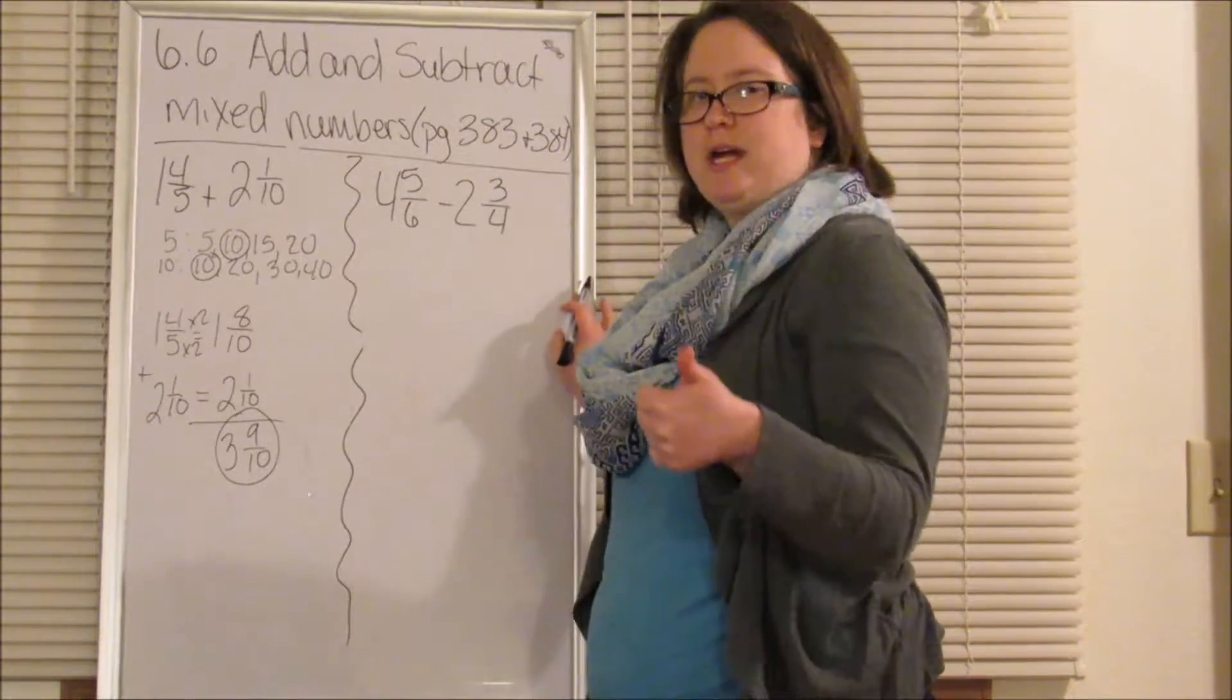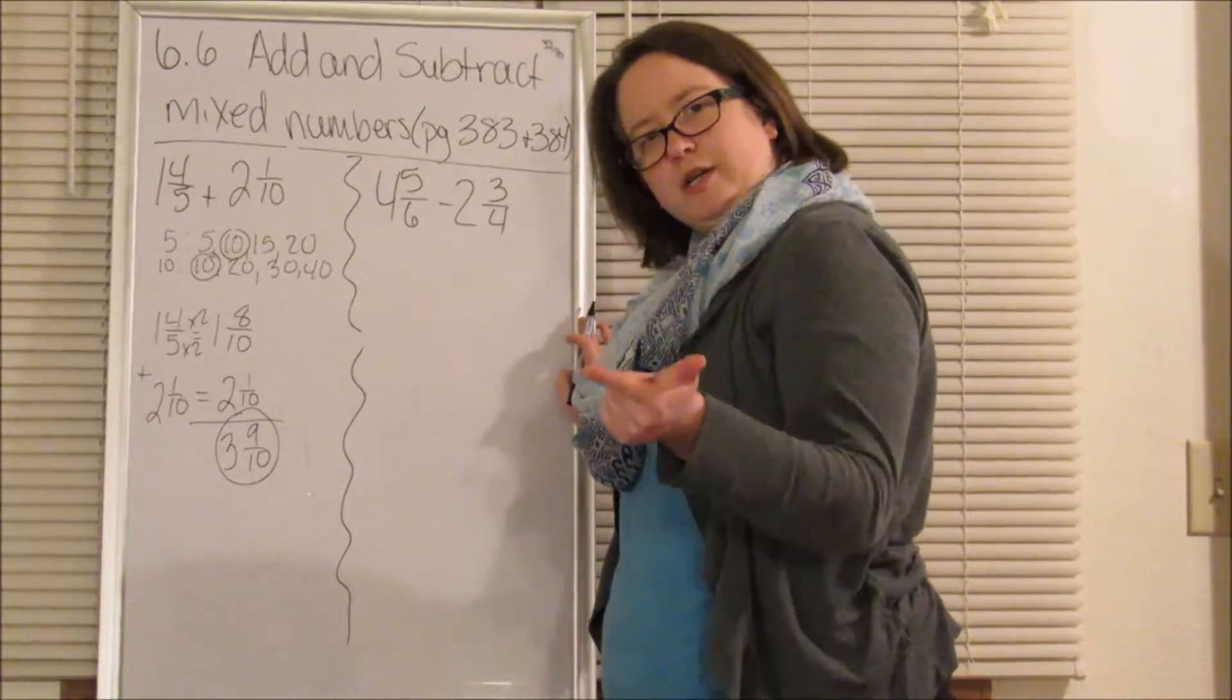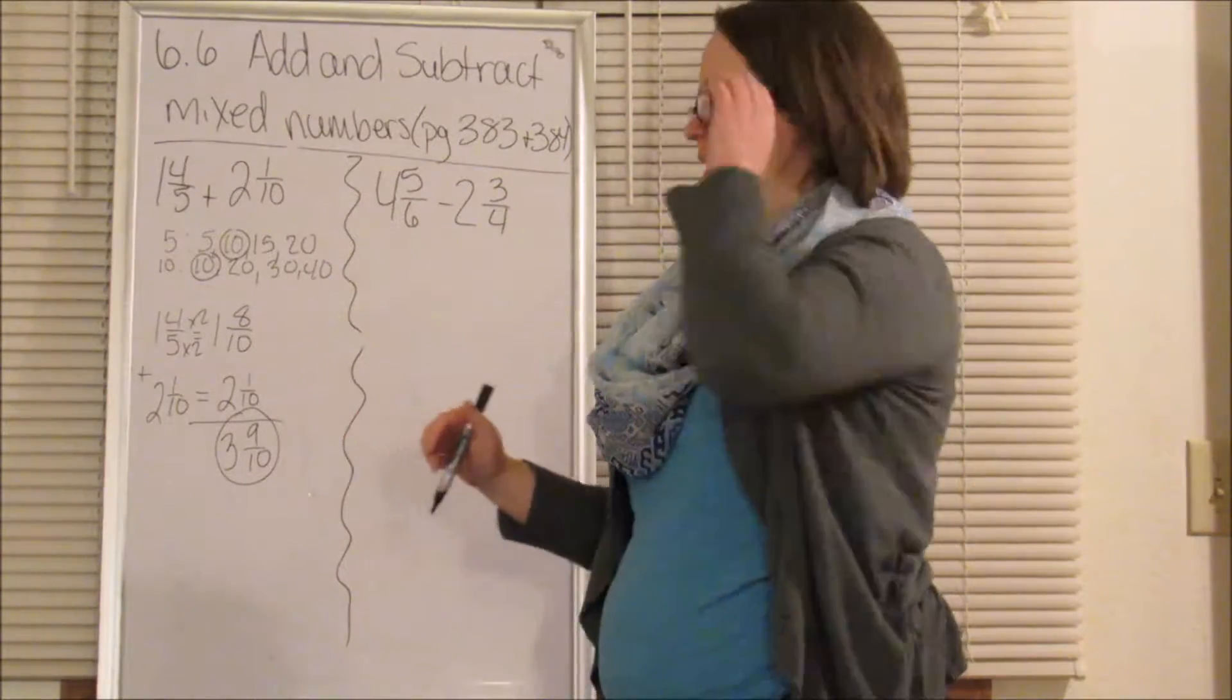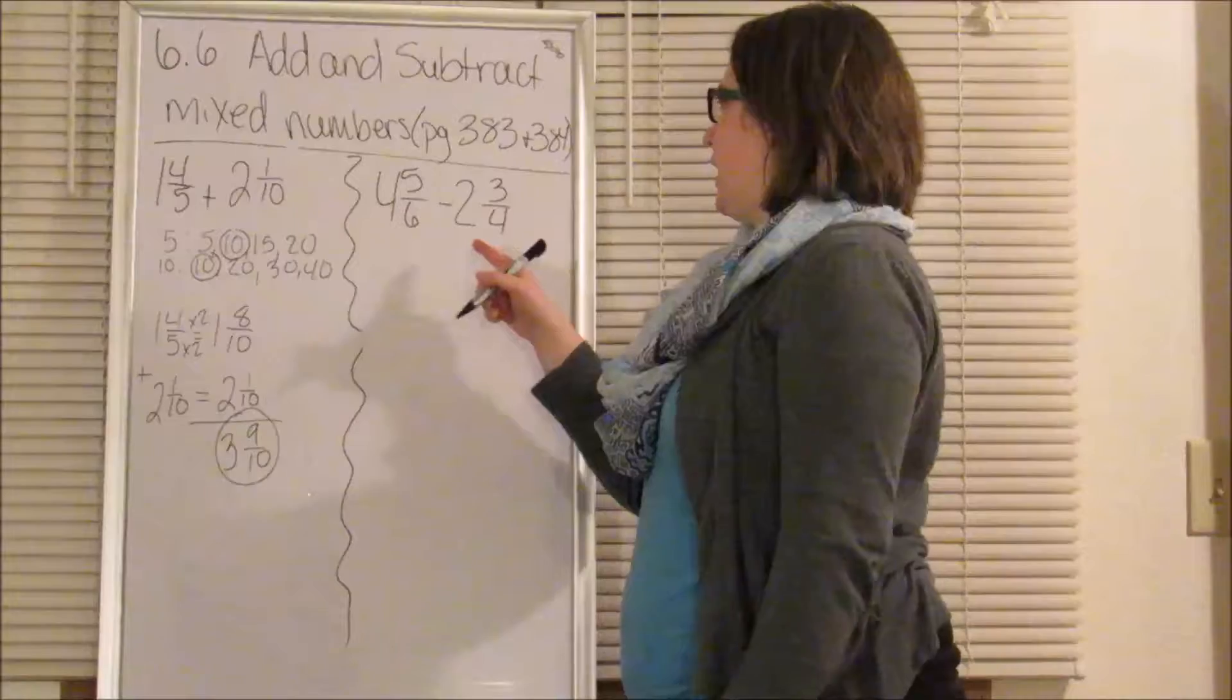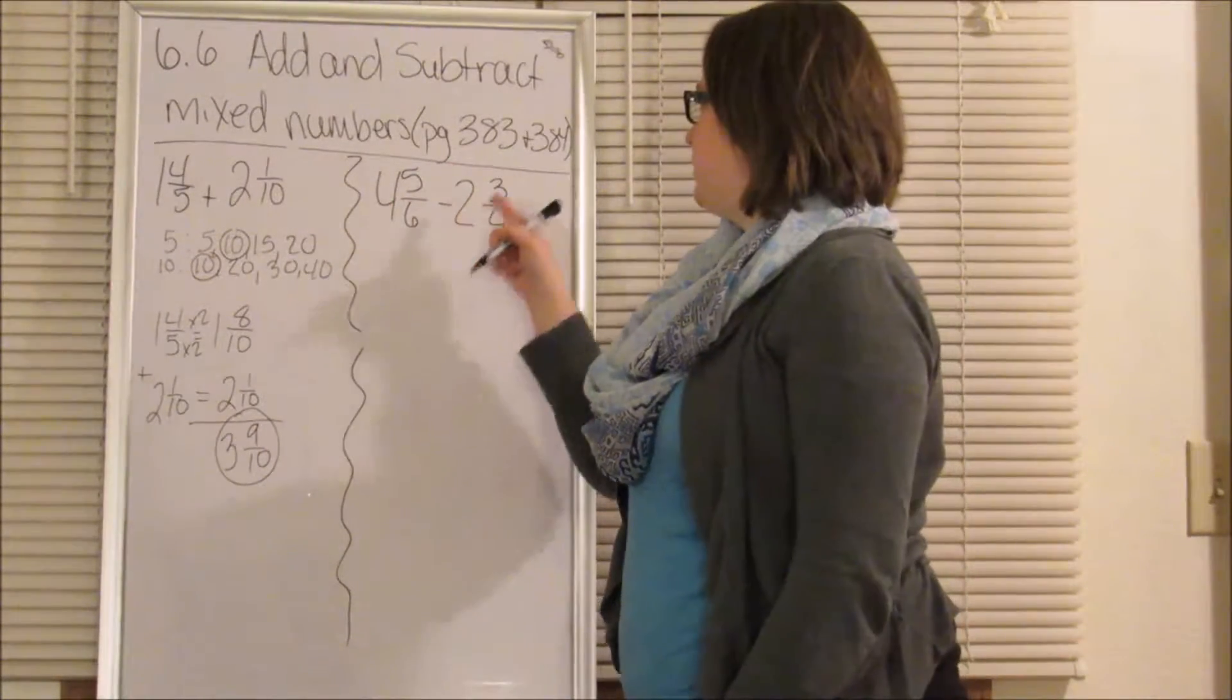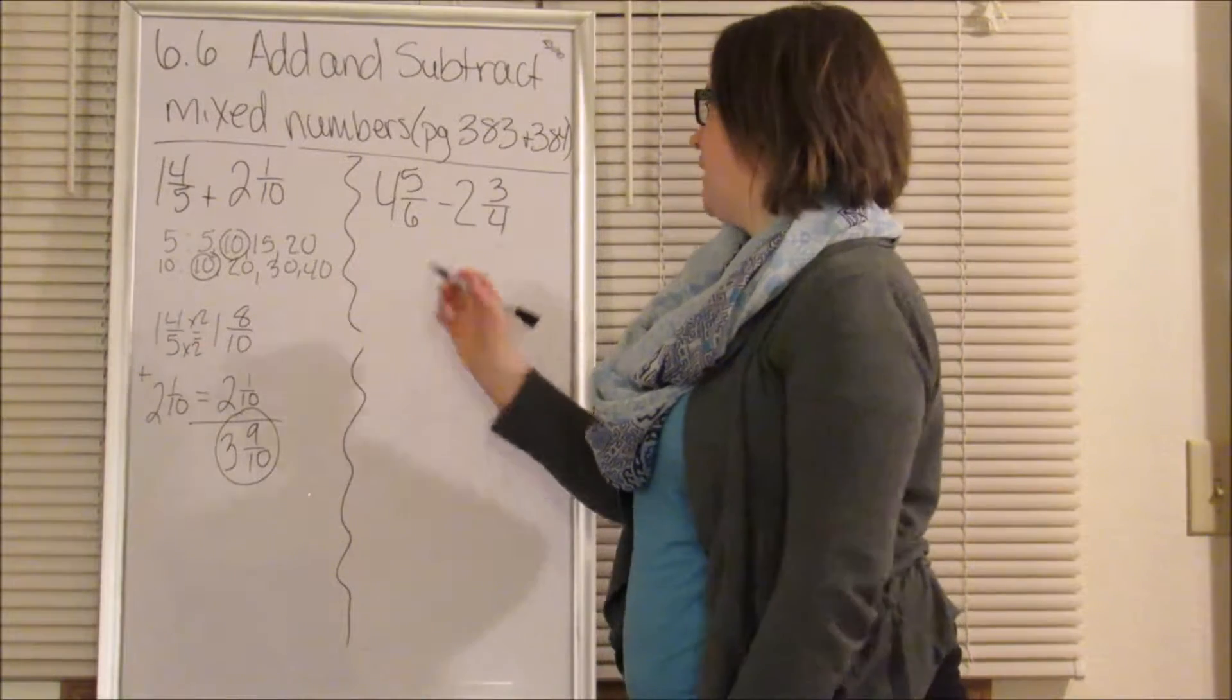So let's do the same step. Find a common denominator, write your equivalent fractions, then add. This is already simplified, so we don't have to simplify anything. Now, let's look at the subtraction problem. So we have 4 and 5/6 minus 2 and 3 fourths. Again, we need to find our common denominator.